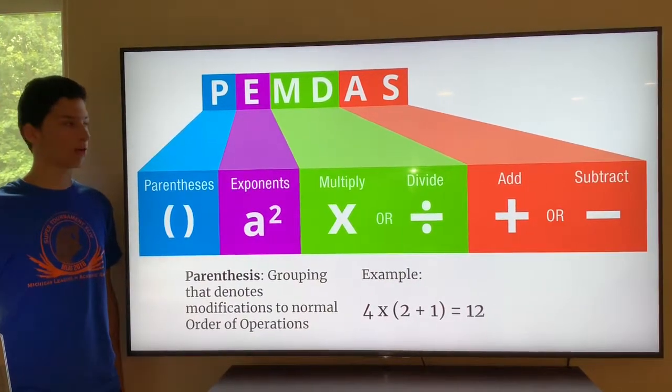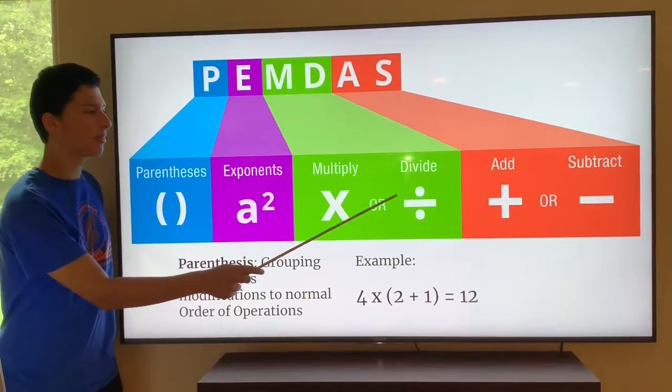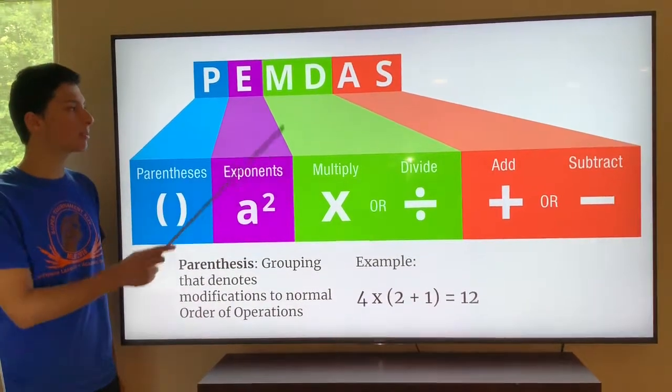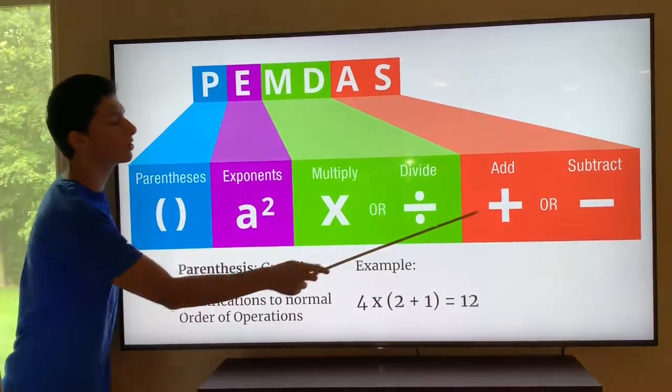I want to make one quick note. You can see that there's multiply, and there's this little or here, and then divide. That's because multiplication and division are on the same level. Multiplication is not above division. These are kind of on the same level, and the same applies to addition or subtraction.